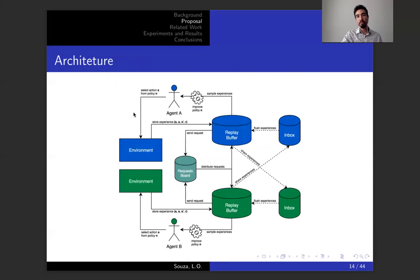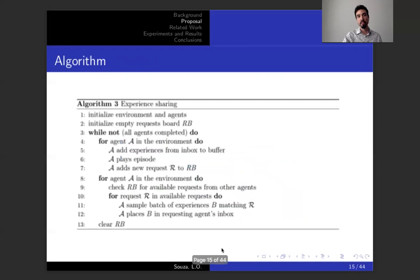The difference here is that at the end of each episode, the agent's going to send a request for experiences which are going to be shared to a common blackboard. In this request board, these requests are going to be distributed amongst agents learning in the same environment. An agent, when he receives the request from the request board, can share experiences to the other agent's inbox. These experiences are going to be flushed into other agent's replay buffer. So the flow is that you receive the request, you share the experiences, and then the experiences are added to the replay buffer of the second agent. This is the overall flow.